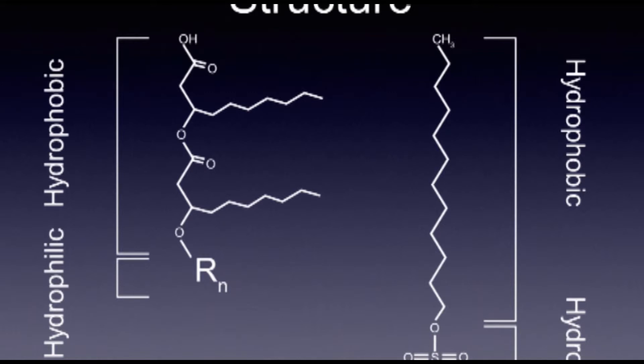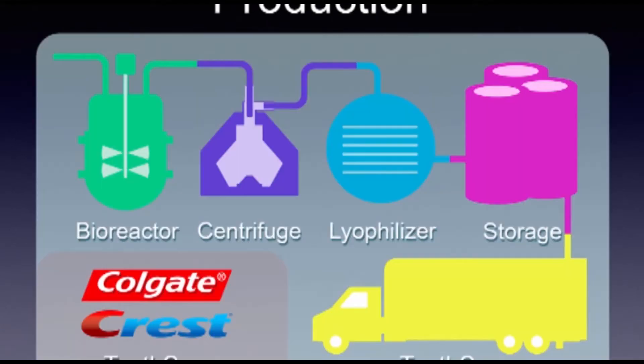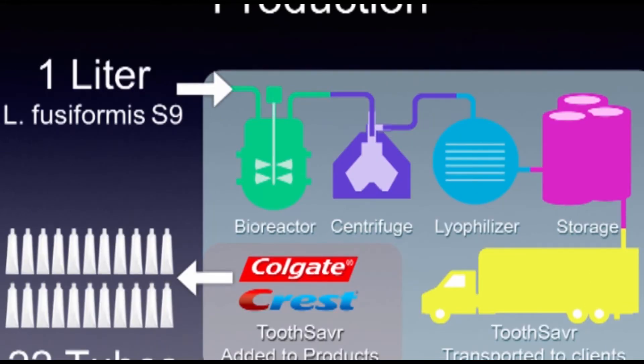Following cultivation in a continuous chemostat bioreactor, ToothSaver will be purified and freeze-dried into a shelf-stable pellet form. We'll be producing it in our own factories and distributing it worldwide. Toothpaste manufacturers will not need to replace any of their equipment on account of ToothSaver's similarity to SDS, saving them time and money.